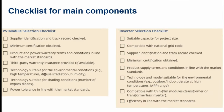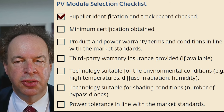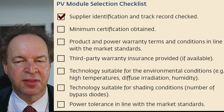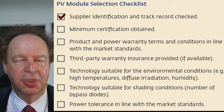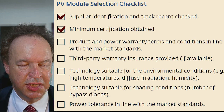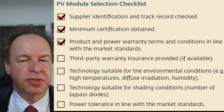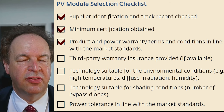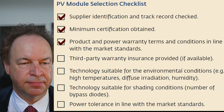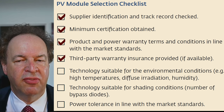Here is the checklist for the main components. For the module, you need a supplier identification and track record check — you have to make sure the warranty can really be fulfilled. If you have a completely new company that has existed only a few months, but you want a 25-year warranty, that's hard to secure. Then the certification — for example IEC 61215 or 61730 for safety requirements. Power warranty terms: usually you say that after 25 or 20 years the power degradation is allowed to be only 20%. Sometimes it's useful to have a third-party warranty insurance in case the manufacturer goes bankrupt.